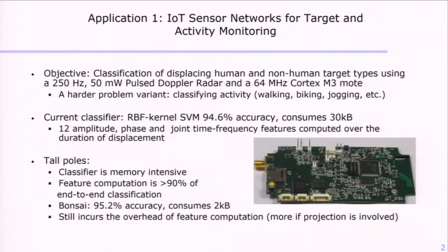Before coming here, we did experiments with Bonsai. We found that it gave us 95.2% accuracy and only consumed two kilobytes of memory, which was a big win in terms of classifier size. But the caveat was still that we had to compute engineered features.